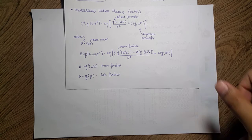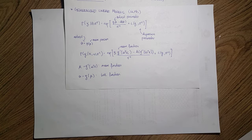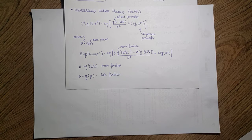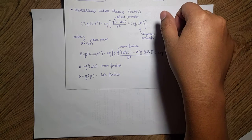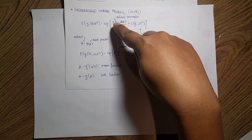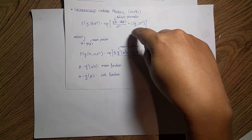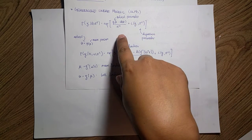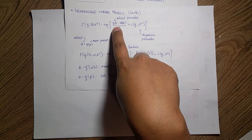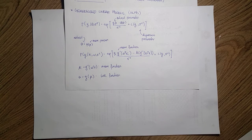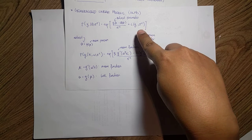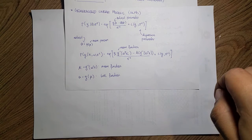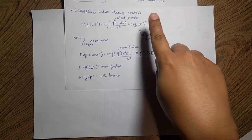In this part we're going to consider this particular form in which the probability of a given sample depends on the parameters, and this distribution is the exponential of y_i times the parameter minus some function a of the parameters. This is the exponential form in which we have the data, the parameter, and the cumulant function, and we also have some function with respect to the data and the dispersion parameter.